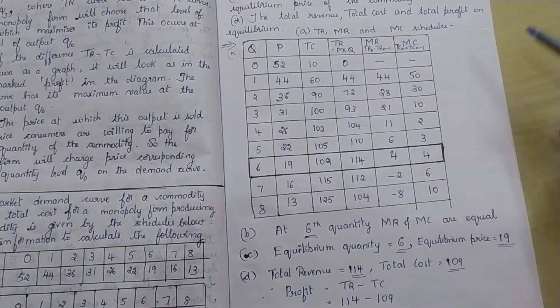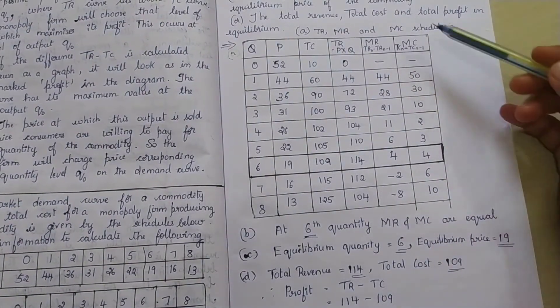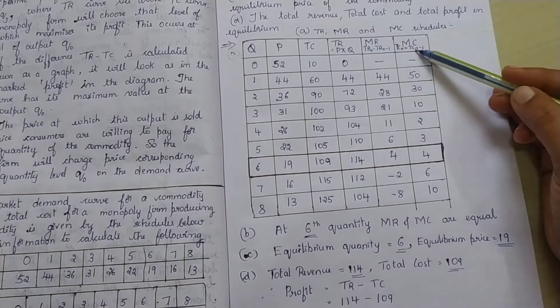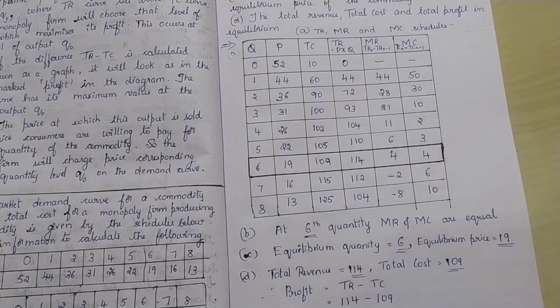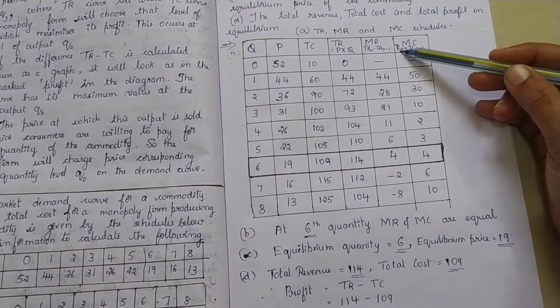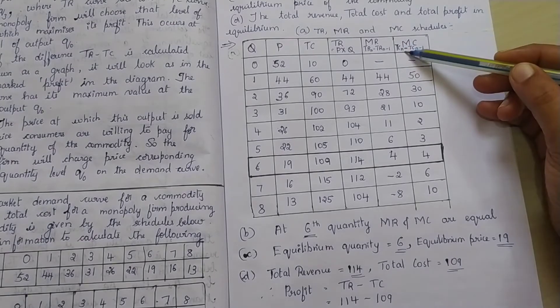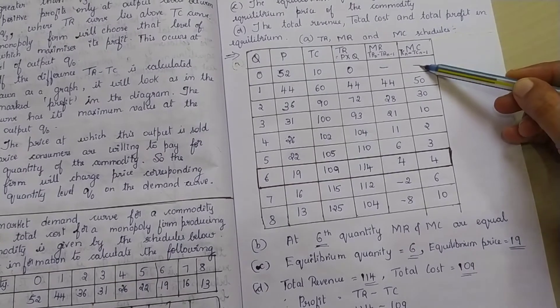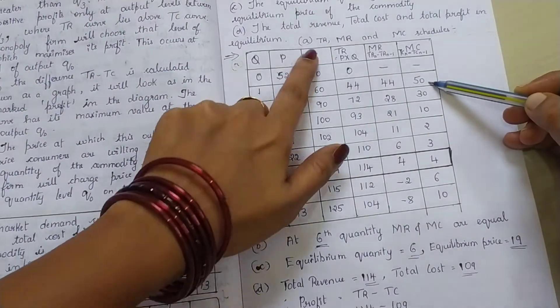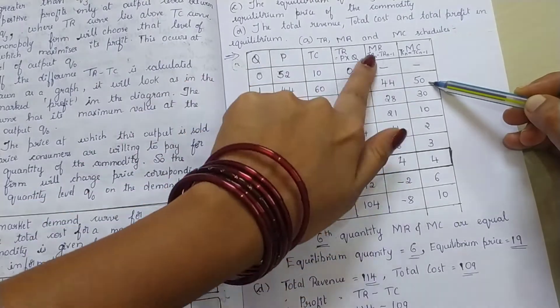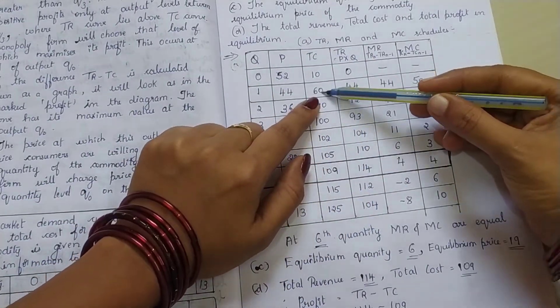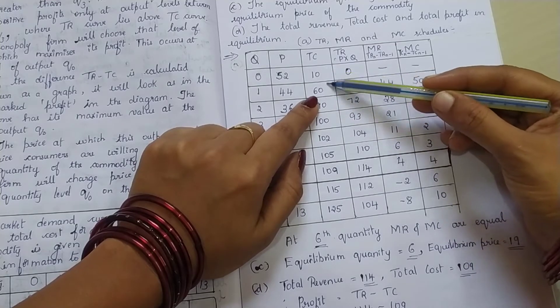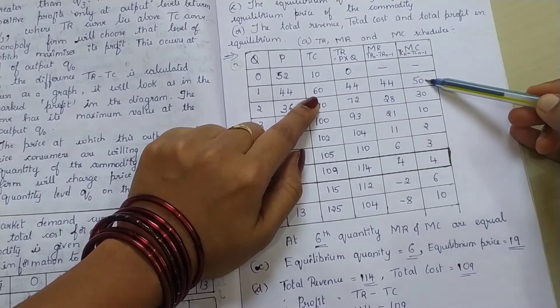Now, we shall move to the marginal cost column. This is also similar to marginal revenue. But here, instead of total revenue, we consider total cost for marginal cost. Rest, everything is the same, okay? So, what will be the formula here? TC, that is total cost of nth unit, minus total cost of n minus 1 unit. So, first one anyhow, it will be dash only. Next one, how to calculate? Look at the total cost column now, not the total revenue. Total cost of nth unit is 60, minus total cost of n minus 1 unit, the previous value. So, 60 minus 10, that is 50.